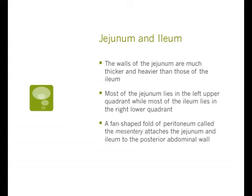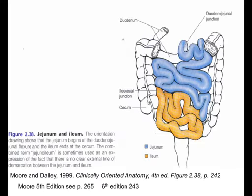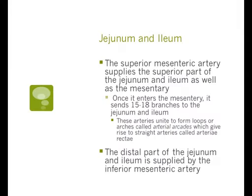A fan-shaped fold of peritoneum called the mesentery attaches the jejunum and the ileum to the posterior abdominal wall; the mesentery is not palpable from outside. The superior mesenteric artery supplies the superior part of the jejunum and ileum as well as the mesentery, splitting into 15 to 18 branches once it enters the mesentery. A part of the jejunum and ileum is also supplied by the inferior mesenteric artery.